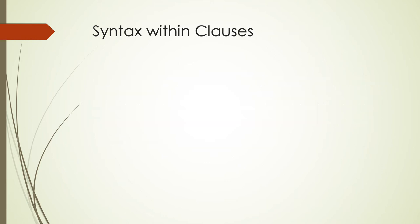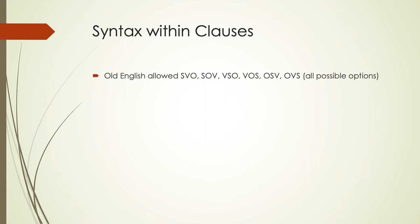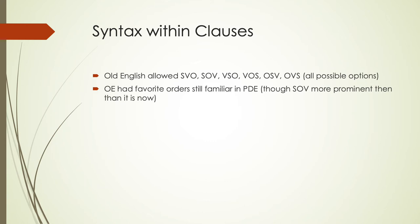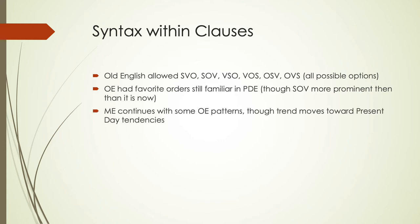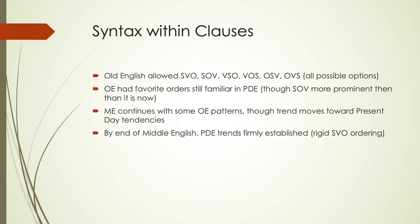At the clause level, Old English allowed pretty much any possible ordering within clauses, though there were still some favorites familiar to us today. The more prominent subject-object-verb construction in Old English starts changing during this time period, with Middle English continuing some of these Old English patterns while the trend moves us closer to present-day. By the end of Middle English, we have a pretty firmly established word order of subject-verb-object, though we see lots of variation and change throughout the period.